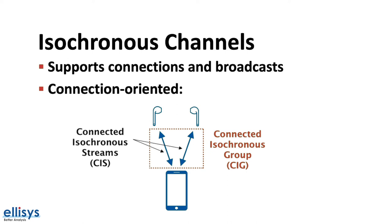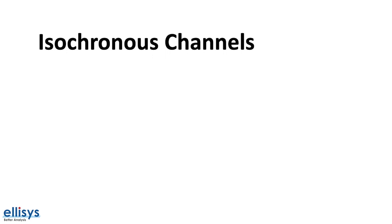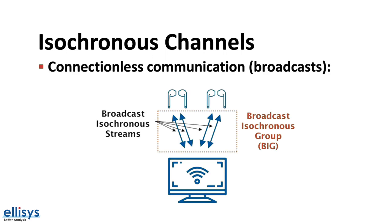For connectionless communication, such as broadcasts, a group of synchronized streams may be used to stream data from a single source to multiple sinks. Each stream is referred to as a broadcast isochronous stream, or BIS. A group of BISs are referred to as a broadcast isochronous group, or BIG. An example of this would be a TV streaming audio data to multiple sinks, such as different individuals wearing earbuds.